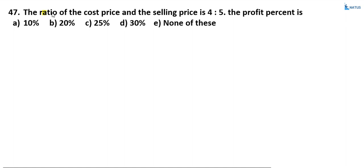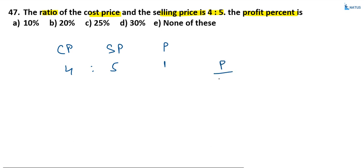The ratio of the cost price and the selling price is 4 to 5. The profit percent is what? Suppose cost price equals 4 and selling price equals 5. Profit equals 1. Profit percent equals profit by cost price into 100, which is 1 by 4 into 100, equals 25%. Option C is the correct answer.